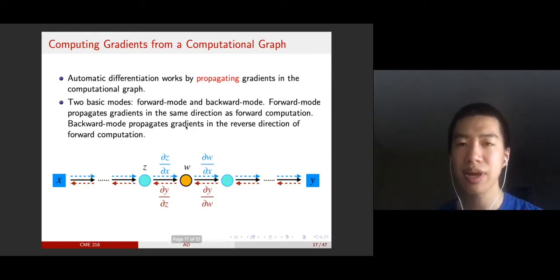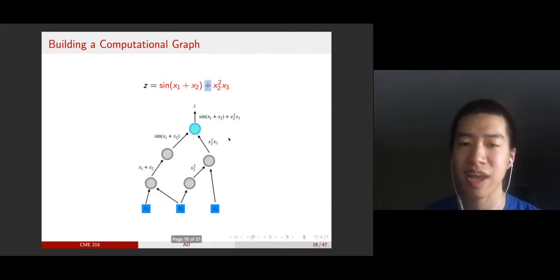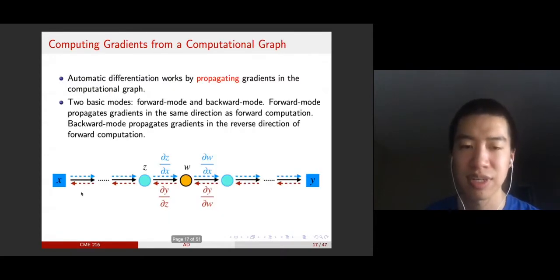Why do we care about the computational graph? This is because automatic differentiation works by propagating gradients in a computational graph. There are basically two modes. Let's consider a simple example here. This is a very straightforward computational graph that does not have this kind of tree structure or complex structure.